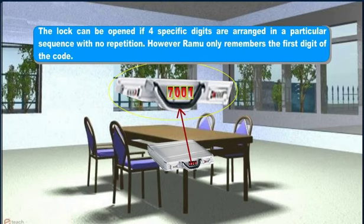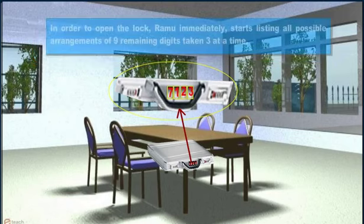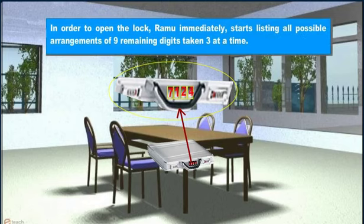However, Ramu only remembers the first digit of the code. In order to open the lock, Ramu immediately starts listing all possible arrangements of the 9 remaining digits taken 3 at a time.